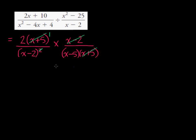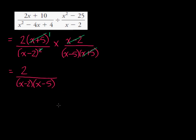So my simplified form is 2 times 1 times 1 over x minus 2 — remember, one of the factors was divided out with the piece in the numerator, so we don't have the squared anymore — and then times x minus 5. And so that's our simplified form.